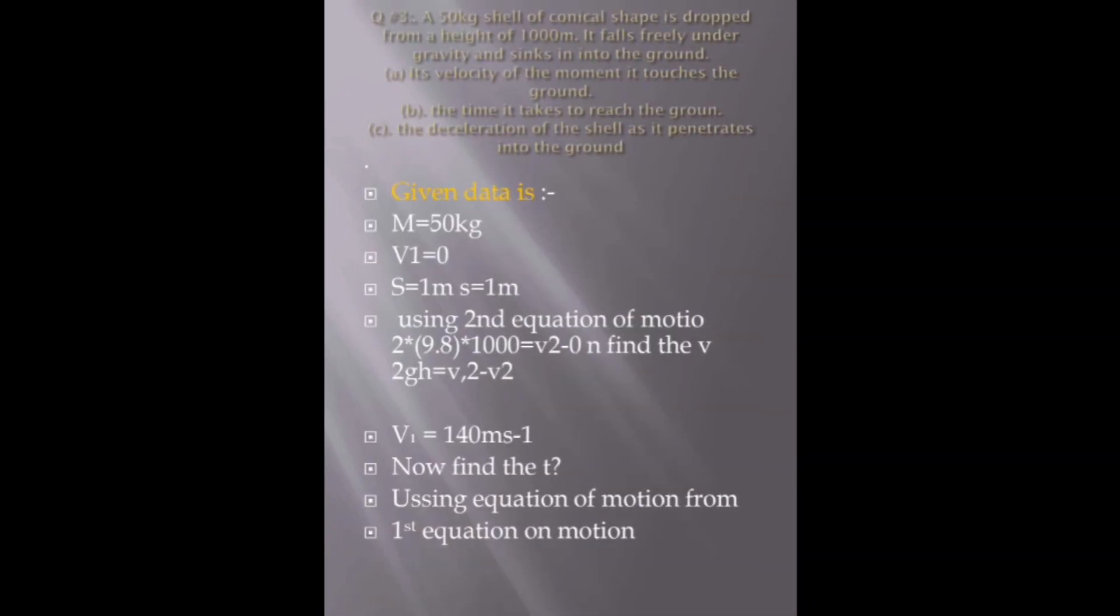Equation of motion. In this numerical we have 50 kg shape dropped from height 1000 meters under free gravity, sinks into the ground. M is 50 kg, S is 1 meter. Using second equation of motion, 2 into 9.8 into 1000 equal to V2 minus 0. Using the formula V squared equal to 2gh, V1 equals 140 meter per second.